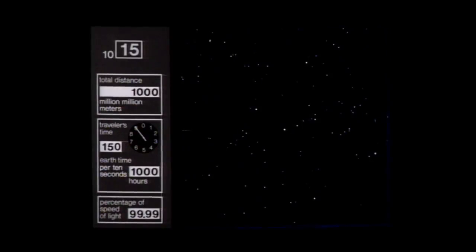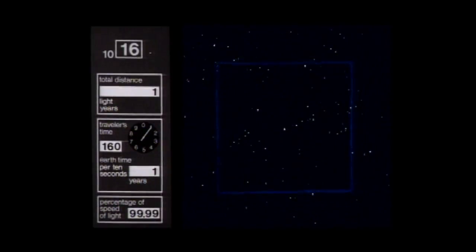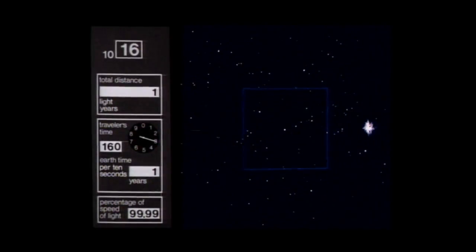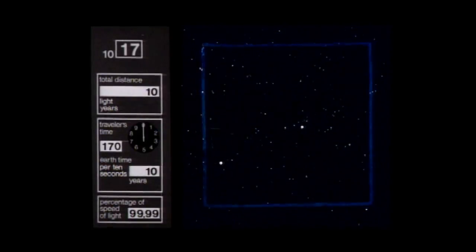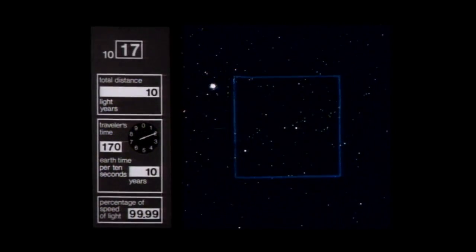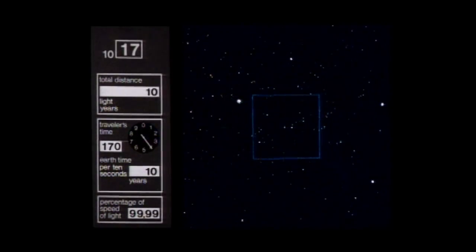We are now one light year away, 10 to the 16th meters. We are approaching the distance of the closest star to the sun, Alpha Centauri. Now our speed is so great that even the stars in the background slowly seem to change their position, converging to the center.